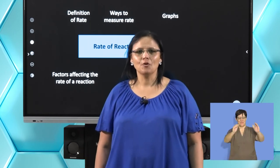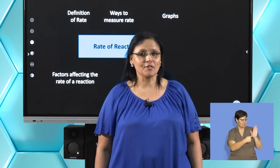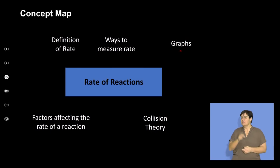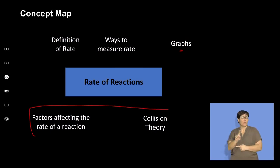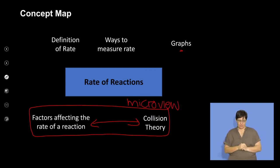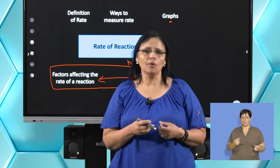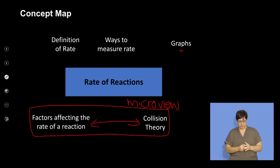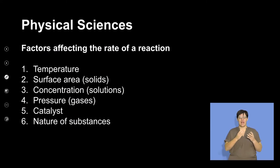Welcome back from the break. We're getting back to the concept map for rates of reaction. In the previous sessions we looked at the definition, factors on a macroscopic view, the ways to measure rate, and graphs. Now I would like to look at the factors again, but this time linking them to the collision theory on a microscopic view — what we cannot see but what we know is happening microscopically.